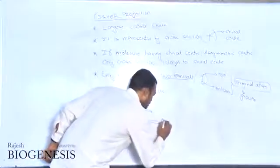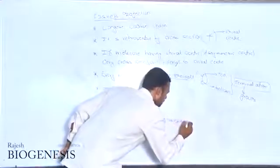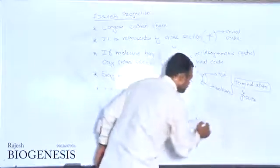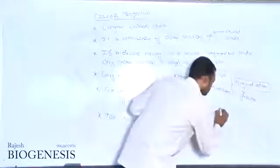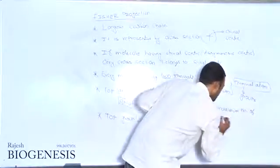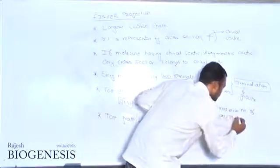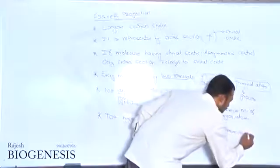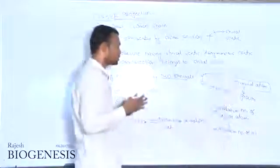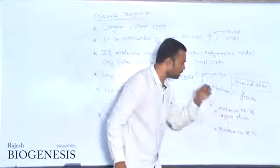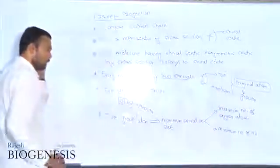This top group should have a maximum oxidation state. Maximum oxidation state means one specified point: it should have the maximum number of oxygen atoms. And one more thing — it should have minimum number of hydrogens. So the atom you are selecting should have maximum number of oxygens and minimum number of hydrogens.